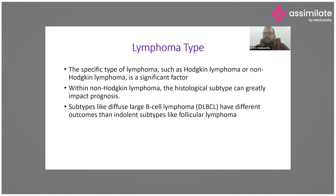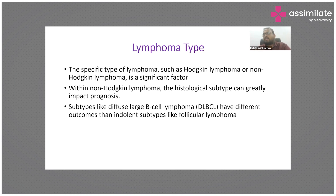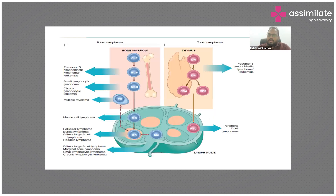Since 2016, classification is no longer purely morphology-based. It is based on the type of cell of origin — whether it is a precursor B cell or peripheral B cell, or precursor T cell or peripheral T cell. If it is a precursor cell, we call it acute lymphoblastic lymphoma. Among peripheral types, the most common is Diffuse Large B Cell Lymphoma, which is the sixth most common cancer among all cancers in the world.